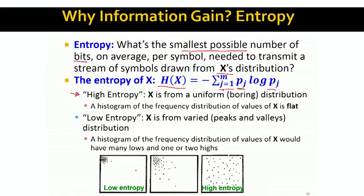The intuition is very simple. If I have a distribution that has high entropy, this means that the probability distribution of x is uniform — everything is flat, everything has the same probability. So if I were to create a histogram, the histogram of this distribution would just be a flat line.